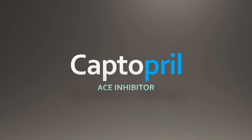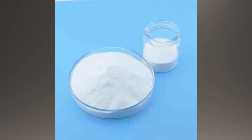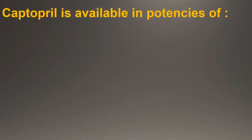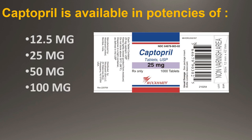Captopril is a white crystalline powder that may have a slight sulphurous odor. It is soluble in water, methanol and ethanol, and sparingly soluble in chloroform and ethyl acetate. Captopril is available in potencies of 12.5 mg, 25 mg, 50 mg and 100 mg as a scored tablet for oral administration.